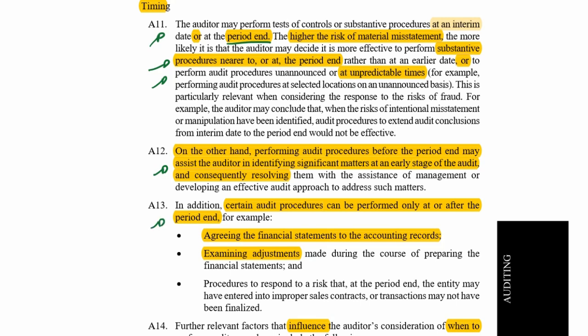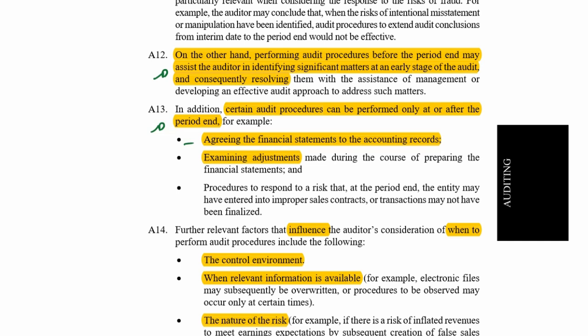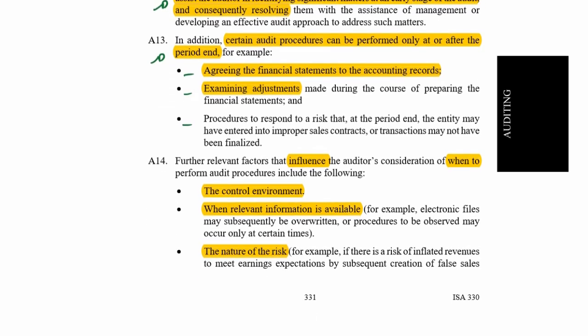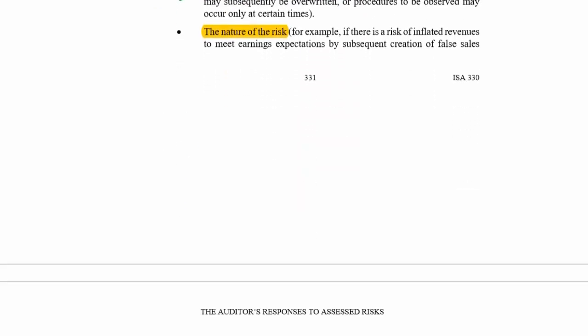Certain procedures can only be performed after year-end, such as agreeing the financials to the accounting records, auditing adjustments, and procedures to respond to the risk that they've entered into improper sales contracts, or transactions that may not have been finalized, or post-reporting date events. Further relevant factors that influence timing include the control environment, when information is available, and the nature of the risks.